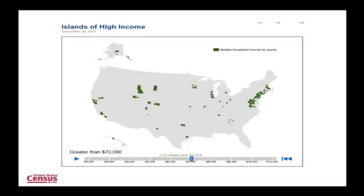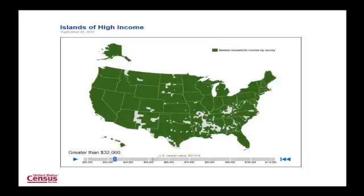Suddenly we have analytical content. We can move that slider down. We call it Islands of High Income — we like to think positive. But if you move that slider down to 32,000, everything's green. Who's above 32,000? The gray is what remains — areas with median household income below 32,000. These are your archipelagos of low income. This is an analysis that is literally unavailable in any other format on the Census Bureau.